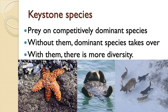So we've identified other species which, as predators, control a species that is so competitively dominant that if it gets too abundant, it reduces the diversity of life all around it. And those are called keystone species.